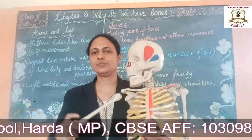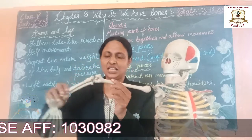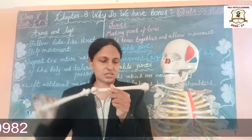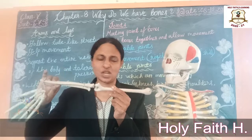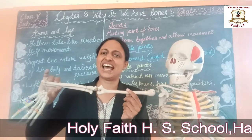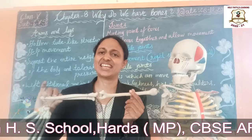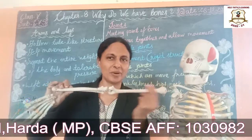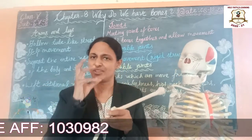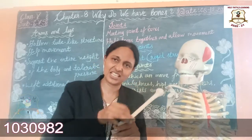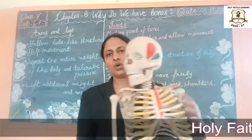Now, the structure. The bones of the arms and legs have a hollow tube-like structure — like a tube, hollow, with space inside.